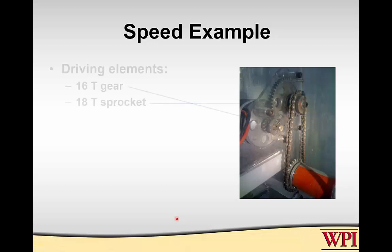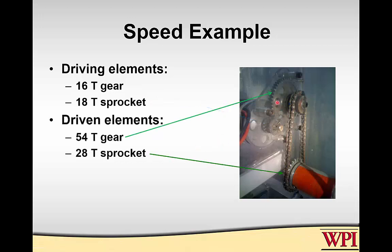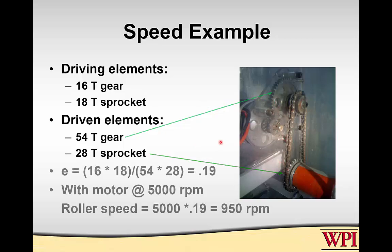Here's an example from a FIRST robot roller that was picking things up. The first stage has two gears and the second stage has two sprockets. The driver on the motor is a 16-tooth gear, and on the first stage we have a 54-tooth gear driven by an 18-tooth gear. The 18-tooth sprocket drives a 28-tooth sprocket. We can calculate the speed ratio — it's independent of friction — and with the motor spinning at 5,000 RPM, the roller speed works out to be 950 RPM.